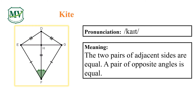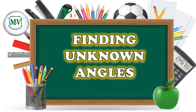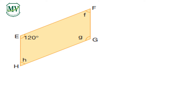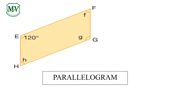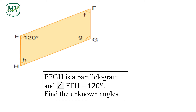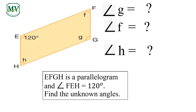Now it's time to apply this concept. Let's learn together on how to find the unknown angles. Can you guess what type of quadrilateral is this? This is a parallelogram. EFGH is a parallelogram and angle FEH is equal to 120 degrees. Find the unknown angles: angle G, angle F, and angle H.